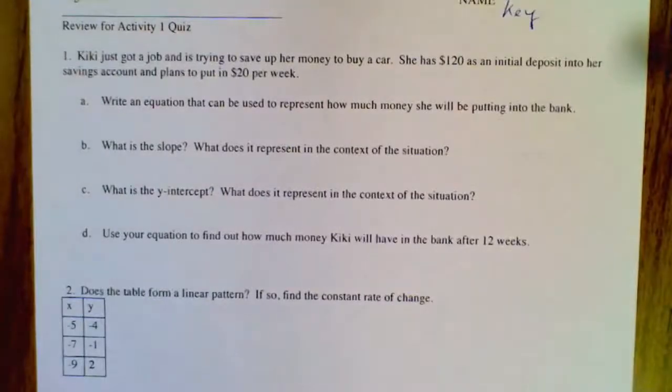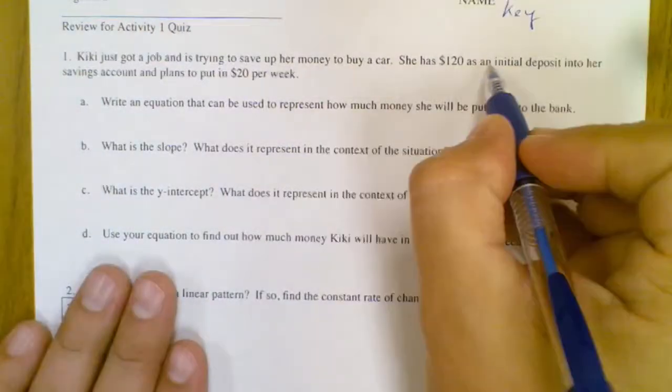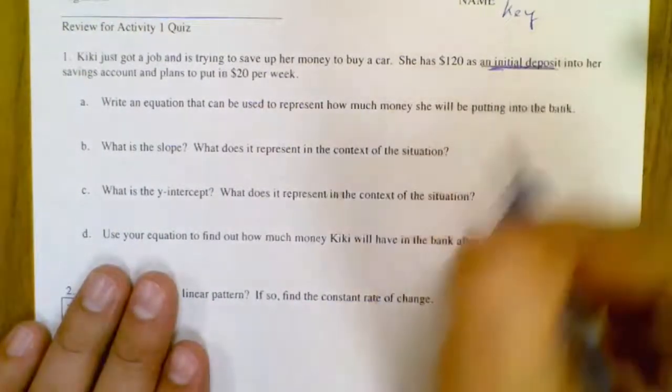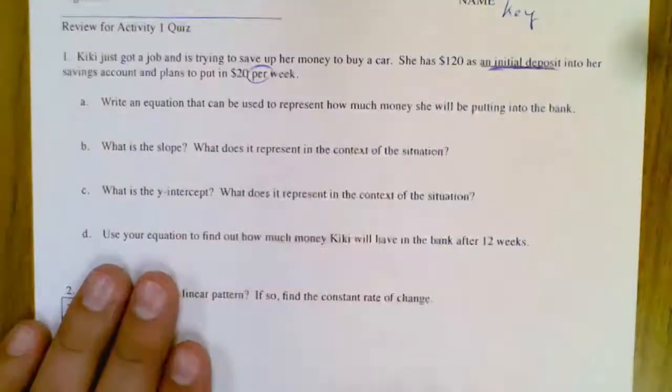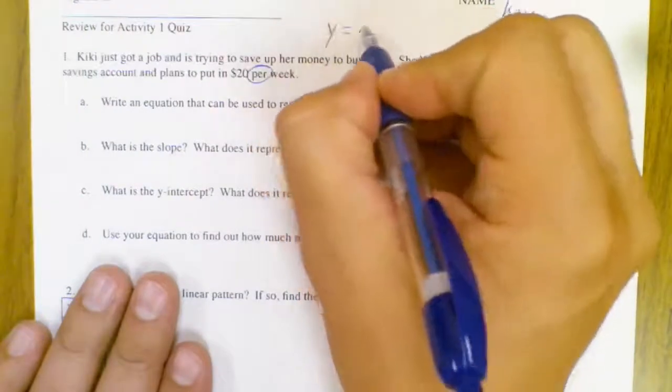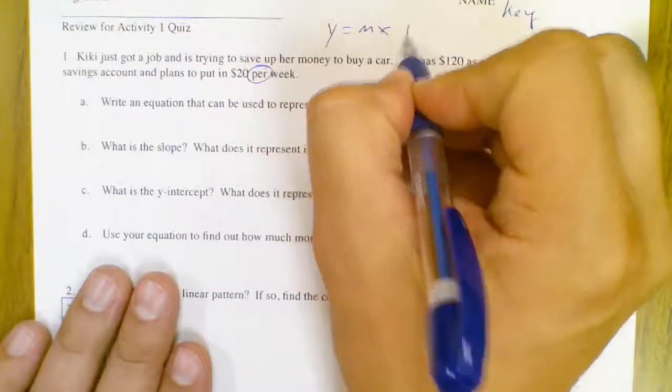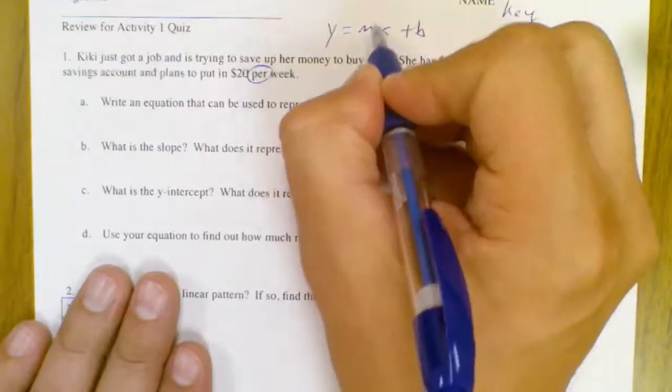a word problem. Kiki just got a job trying to save up money to buy a car. She has $120 initial deposit and $20 per week. Remember when you see that per, it should help you remember that you need